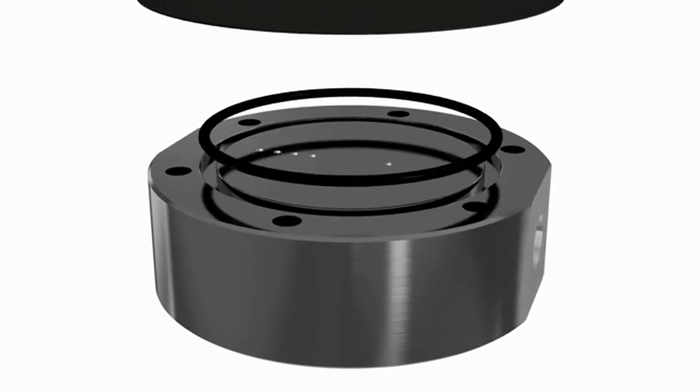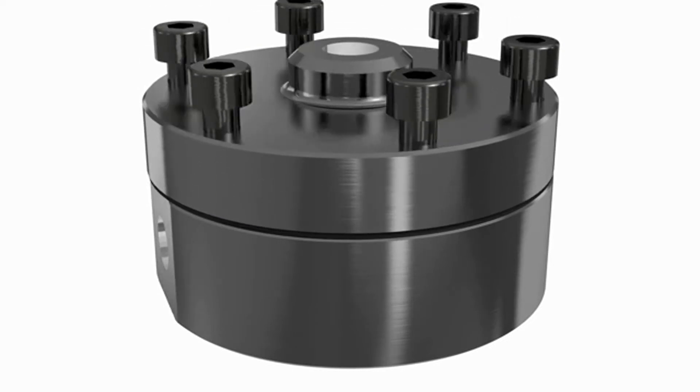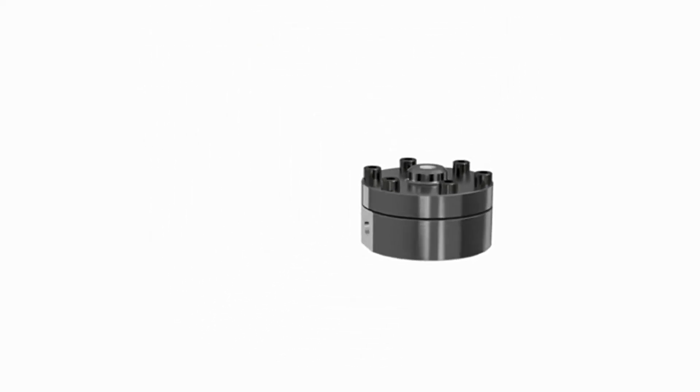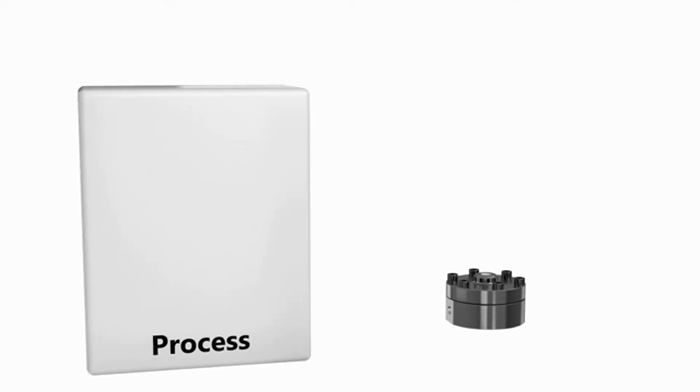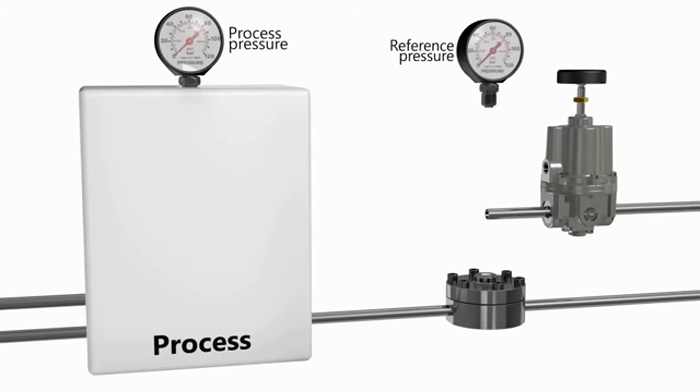A diaphragm sealed by two O-rings is placed between the main body and the reference cap. The regulator is placed downstream of a process to keep its pressure constant. In this case, the process pressure is monitored by a pressure gauge. To set the pressure, a standard manual forward pressure regulator is used.